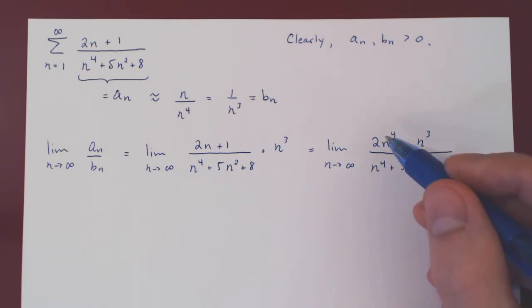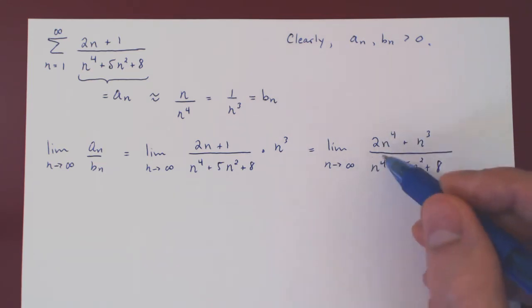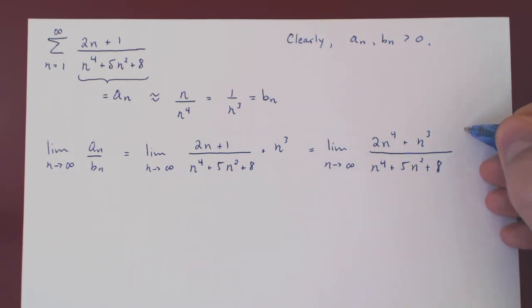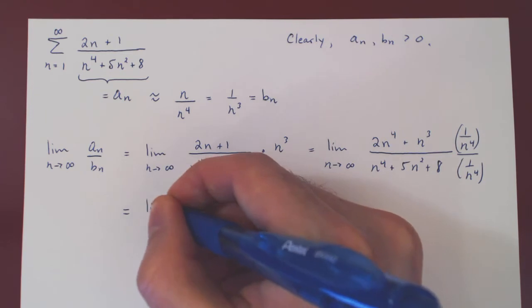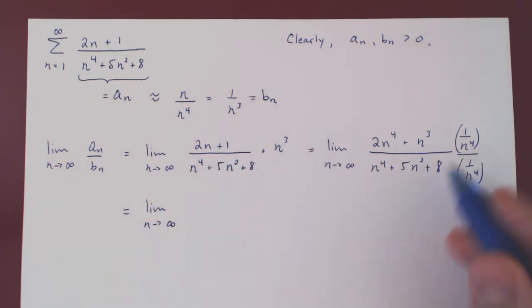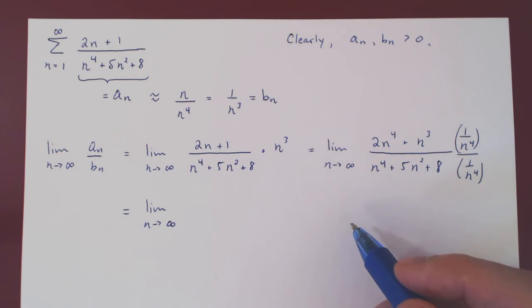Clearly, the largest term is the N to the 4 on top and on the bottom. So we can simply divide top and bottom by N to the 4. And this is okay, as 1 over N to the 4 over itself is 1. So we are not cheating here. And as soon as we multiply out, we'll have a very simple limit.